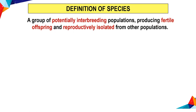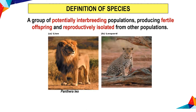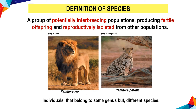Definition of species: a species is a group of potentially interbreeding populations producing fertile offspring and reproductively isolated from other populations. Individuals that belong to the same genus but different species include Panthera leo and Panthera pardus.